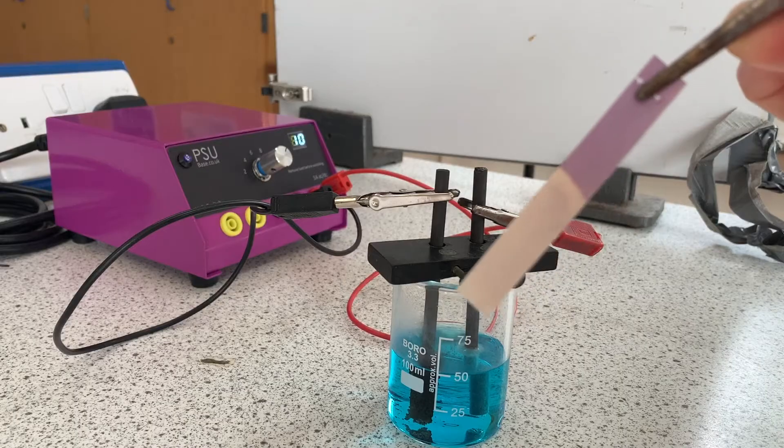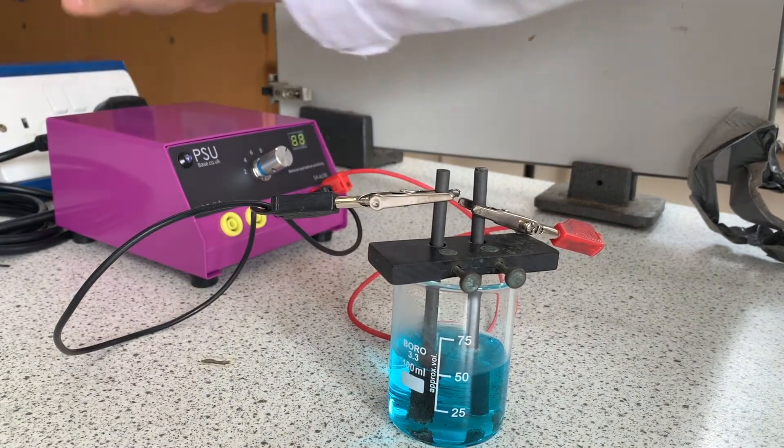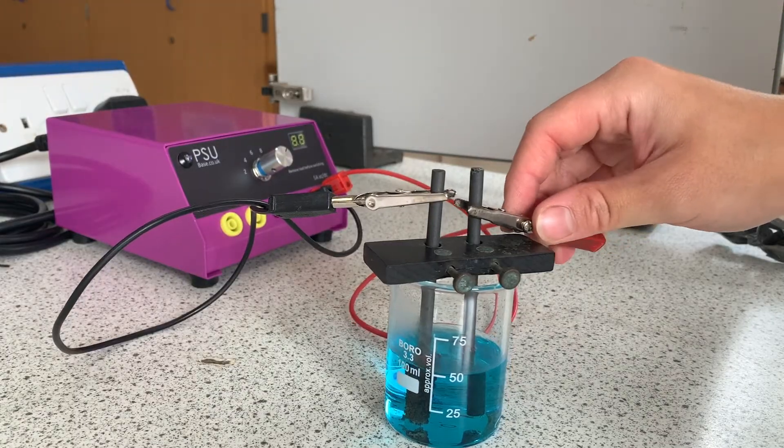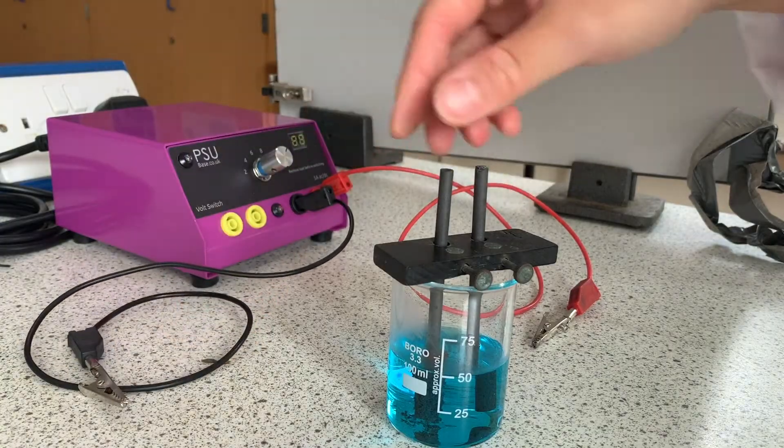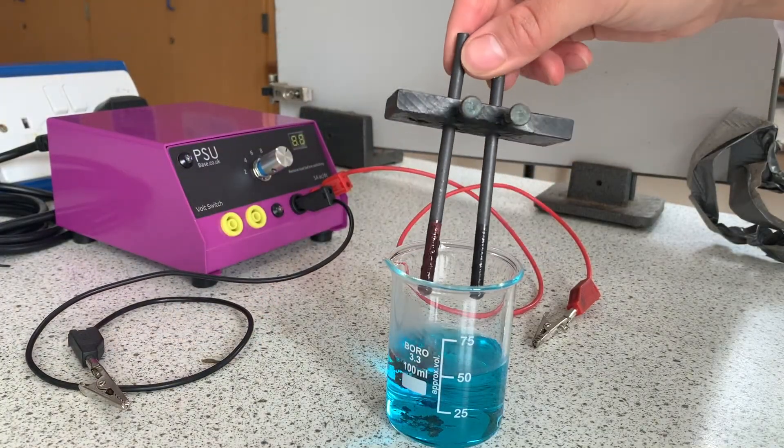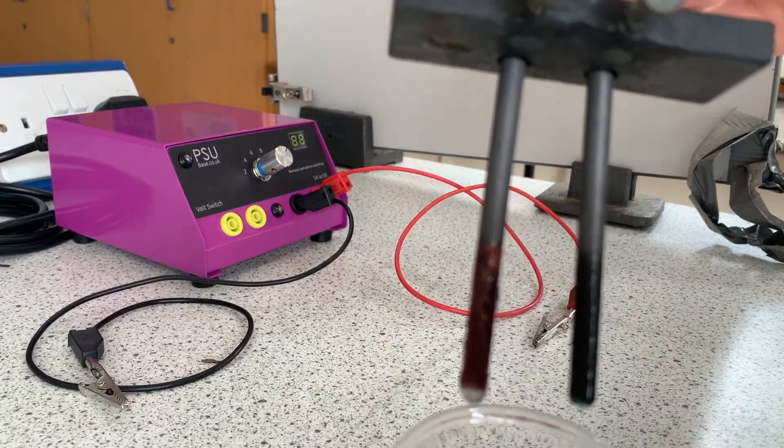Now I'm turning off the power source and we can take a look at the negative electrode. Here you can see that copper has been produced and it's coating the electrode.